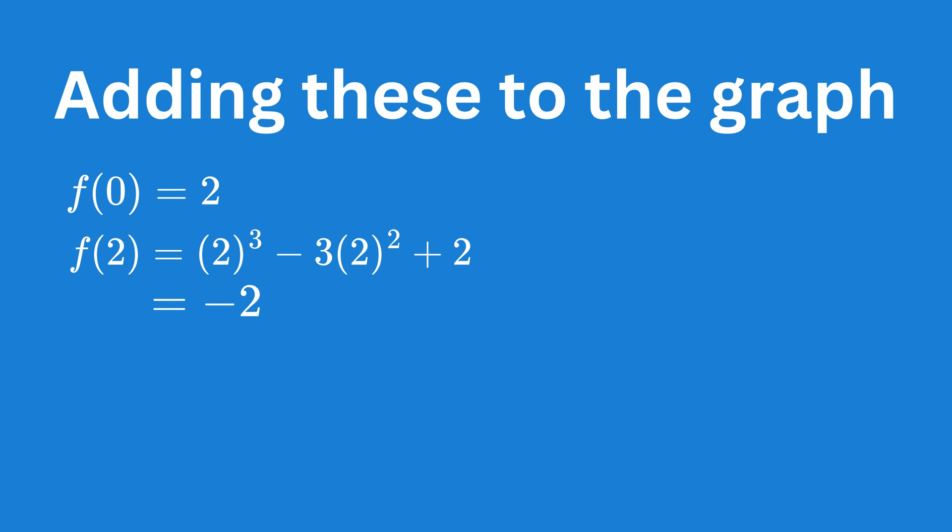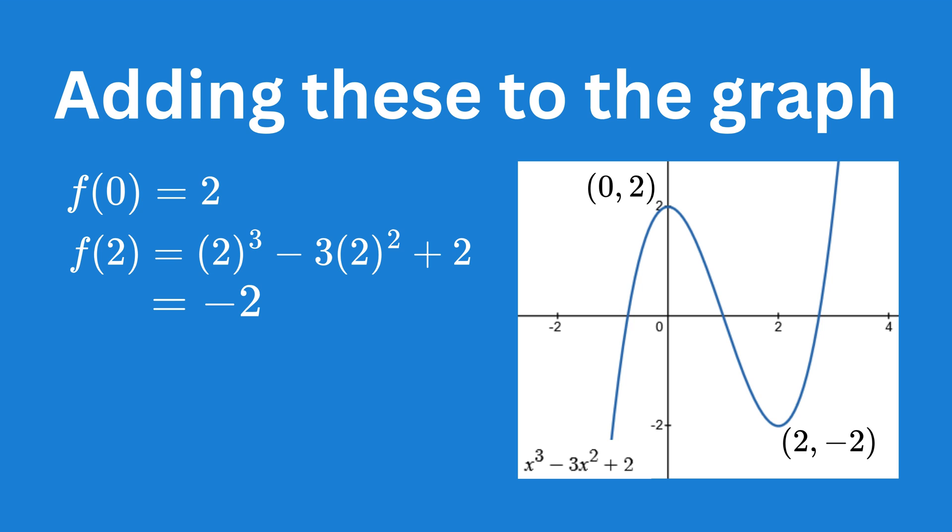So our turning points are at (0, 2) and (2, −2). If we plot these on a graph and remember the s-shape that corresponds to a positive x cubed graph, we can easily draw the graph on the right of the screen.